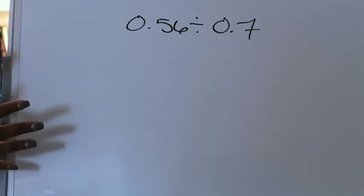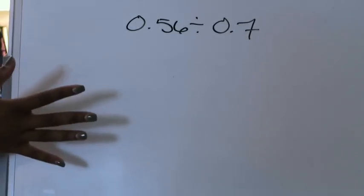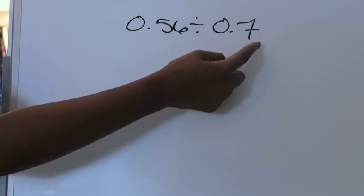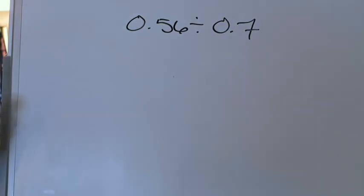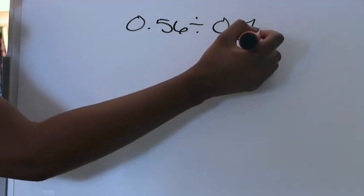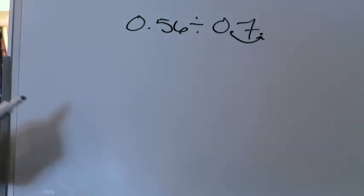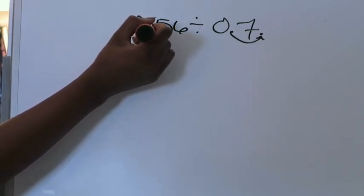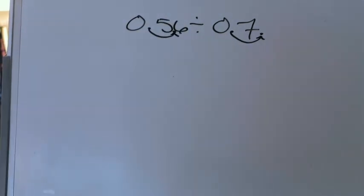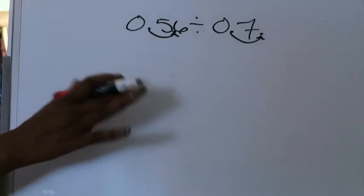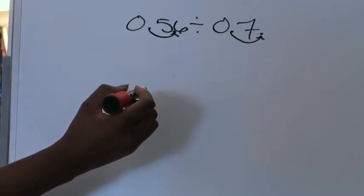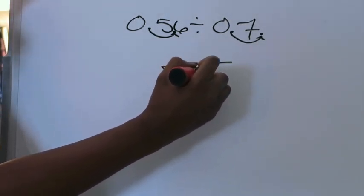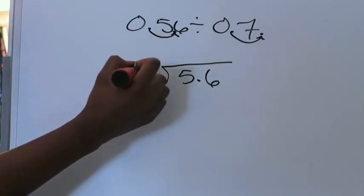We just did some practice to refresh our memory with how powers of 10 work. So in this example I'm going to go ahead and know that I would need to move this decimal point one time to the right — or multiply by the first power of 10 — to have that be read as 7. The rule still applies with the dividend: however many times I move the decimal point in my divisor, I must do the same in my dividend so that my quotient is still accurate. So now my problem is written as 5 and 6 tenths divided by 7.